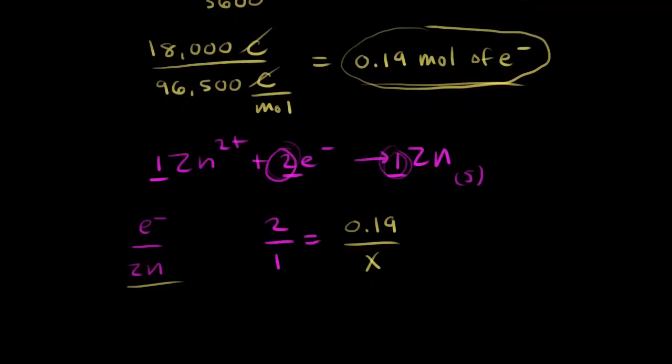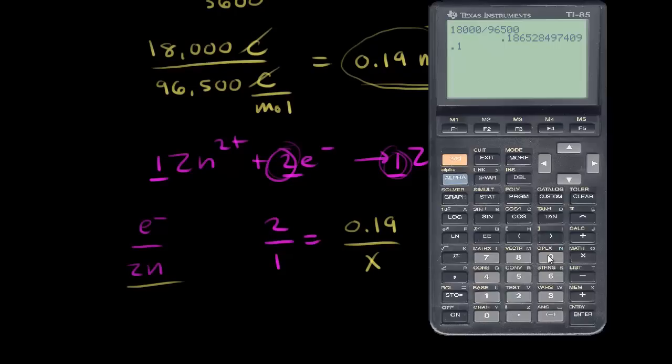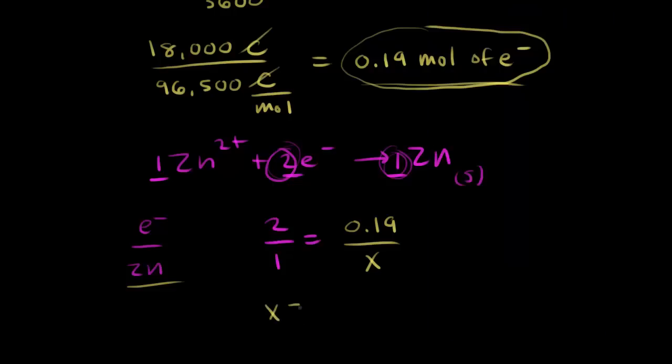Let's solve our proportion. That's 2x is equal to 0.19. So 0.19 divided by two is equal to 0.095. So x is equal to 0.095. And x represents the moles. This is the moles of zinc that are produced in our reaction.